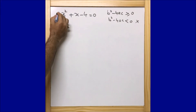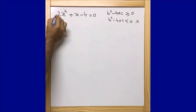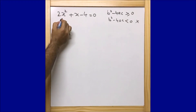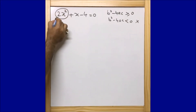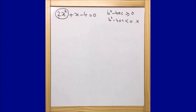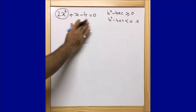For the method of completing the square, the coefficient of x² should be a perfect square. Here the coefficient of x² is 2, which is not a perfect square. If it were 4, it would be a perfect square.